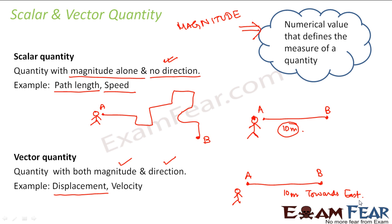We can say it this way: distance plus direction is displacement. However, distance and displacement are not always the same. Distance is a scalar quantity; displacement is a vector quantity — that is the first difference. The next difference is that for distance, the nature of the path followed by the object matters. For displacement, only the initial and final points matter; the nature of the path doesn't matter at all.